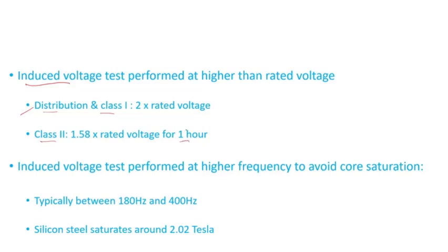For Class II transformers, it's 1.58 times the rated voltage for the one-hour test, and we'll see in other videos—for one minute or a few seconds it can be 1.8 times the rated voltage. But the point that I'm trying to drive here is that the induced voltage test is applied at a voltage that's more than the rated voltage.